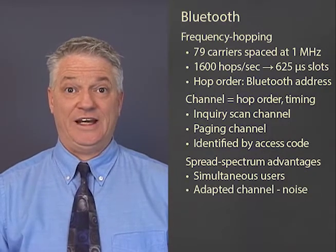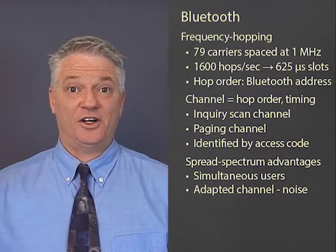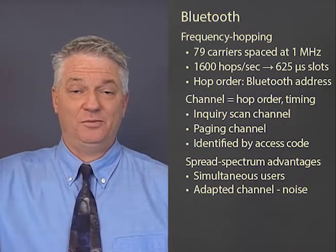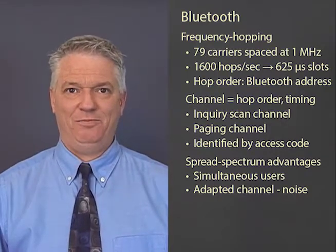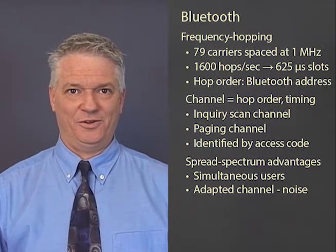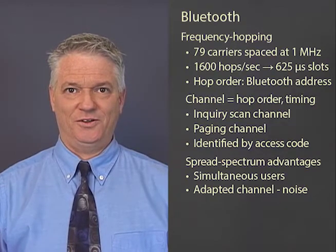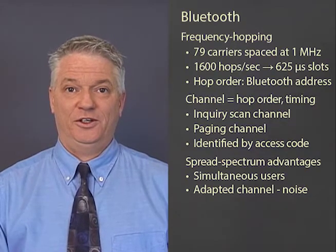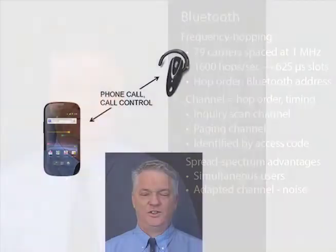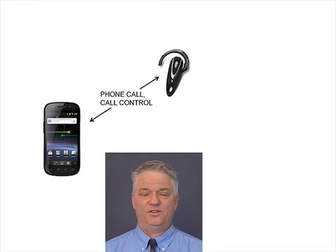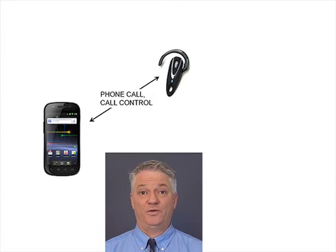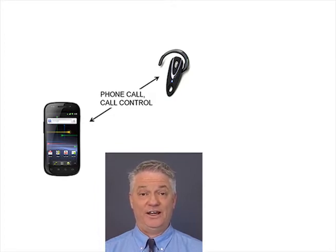There's also an adaptive variation that allows the hop sequence to be modified to skip carriers where there's a bad signal-to-noise ratio, to improve the overall bit rate. Some examples of what Bluetooth is used for: the most common is to connect a smartphone to a remote microphone and speaker system for hands-free operation of your smartphone.